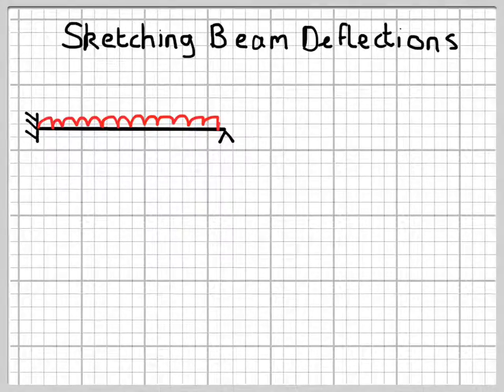In this example, we'll start with the boundary conditions, and here we've got, at the right-hand end, a pin support, so that immediately tells us that the deflection at that point is zero. It doesn't tell us anything about the gradient of the beam, though, so it's one piece of information.